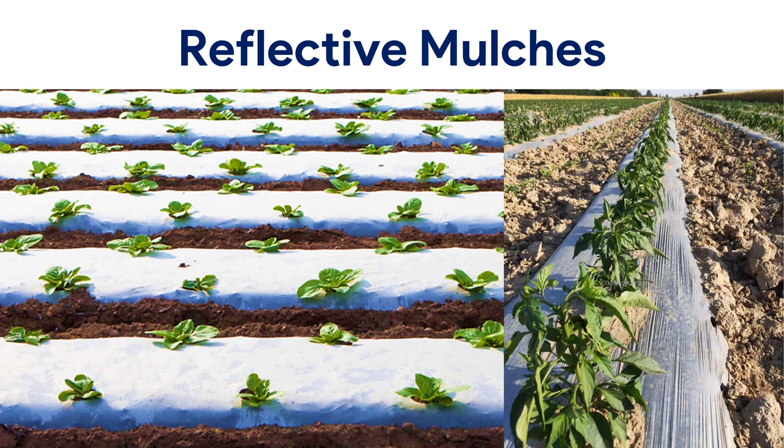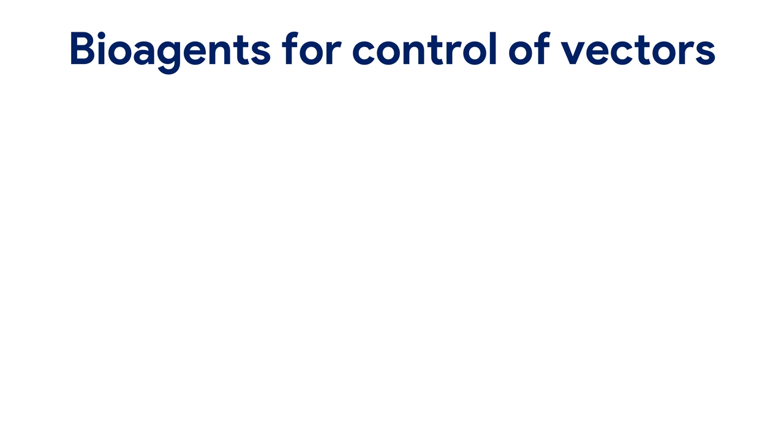A reflective mulch delays or prevents certain flying insects from infesting plants because reflected ultraviolet light confuses insects' ability to locate their hosts. Reflective mulches have been effectively used to greatly reduce colonization of young crops by winged aphids, leafhoppers, thrips, and whiteflies.